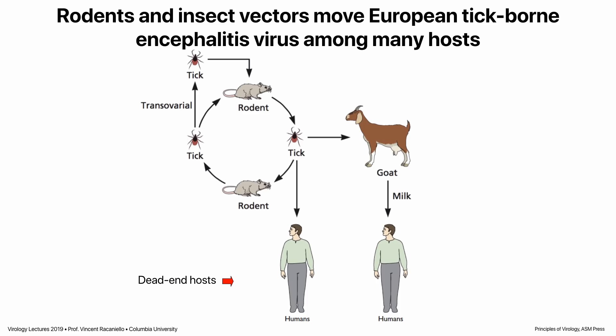In a tick-borne example, ticks move viruses among rodents — the rodent is the reservoir. Ticks may also bite goats and spread virus to them. If ticks bite humans, or if humans drink goat milk from an infected goat, they get the infection as dead-ends. Humans do not serve as transmission vectors for this virus.